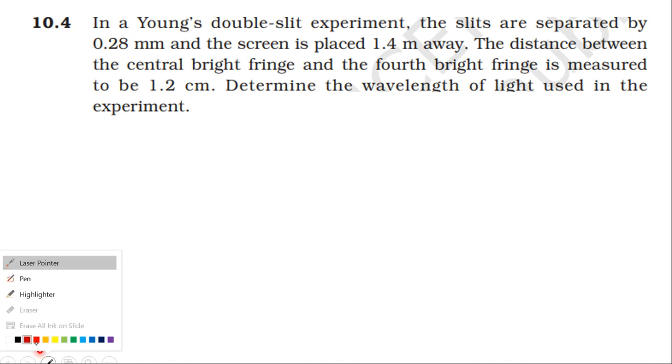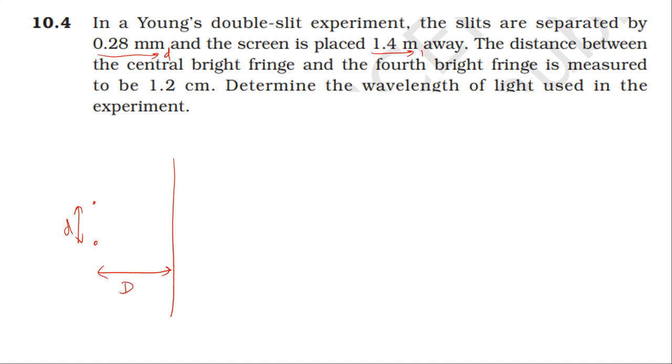In the double slit experiment, the distance between the slits is small d, and the small d is 0.28 millimeter. The screen placement distance between the slits and the screen is capital D, and the capital D is 1.4 meter.